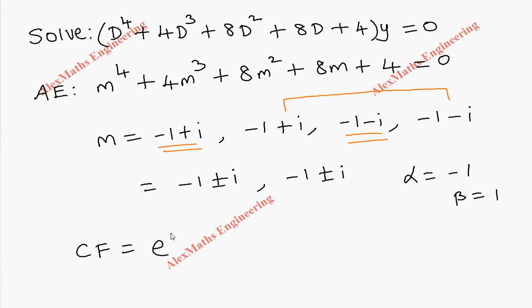So e^(αx), make it open. Since the roots are repeated twice, instead of constant, we have to write a linear function. So (c1 + c2x)cos(βx), then another two constants, (c3 + c4x)sin(βx).